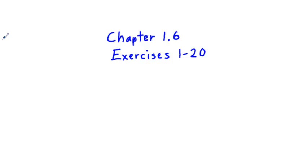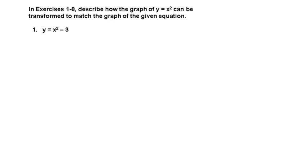This is chapter 1.6, exercise 1 through 20. This section of the book has to do with graphical transformations. I'm going to work over these odd number problems. We're going to be looking at the transformations, and we're going to be looking at three kinds of things here.